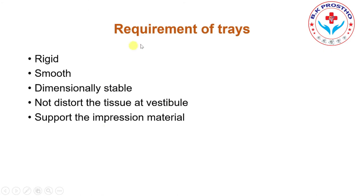What are the different requirements of the tray? For an appropriate impression, the tray should be rigid — it should not be flexible. Using a flexible tray can cause flexing while making the impression, increasing chances of distortion. The tray should be smooth, should not be rough, and should not irritate the mucosal organs. Dimensionally, it should not distort the tissues, especially at the sulcus or vestibular area, and should provide support to the impression material while making an impression.